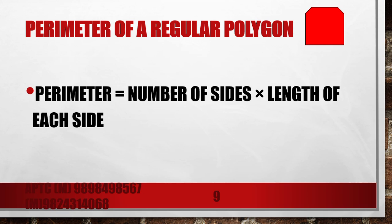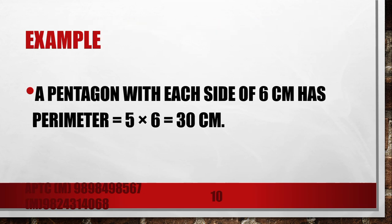For a regular polygon, the formula is Perimeter = number of sides × length of each side. Example: a pentagon has five sides and each side is 6 cm, so 5 × 6 = 30 cm.